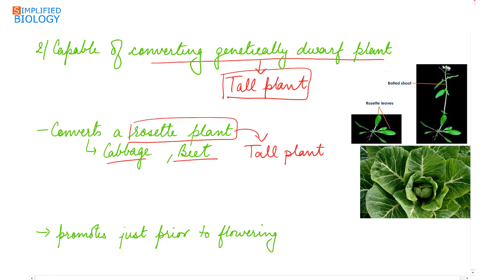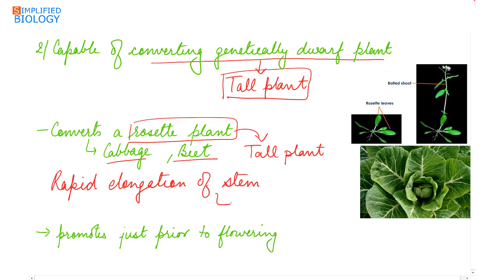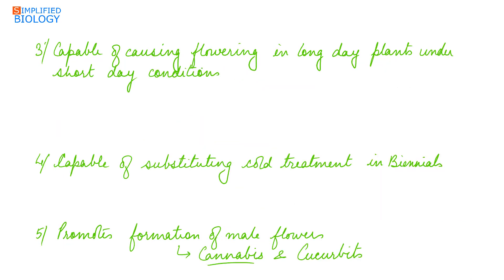This rapid elongation of the stem is known as bolting, and bolting occurs just prior to flowering. So a rosette plant can be made tall by giving gibberellin, and gibberellin is capable of causing flowering.